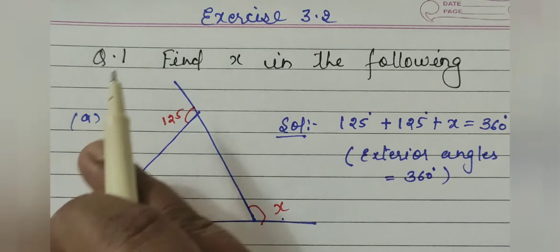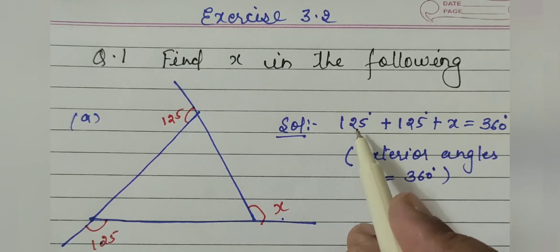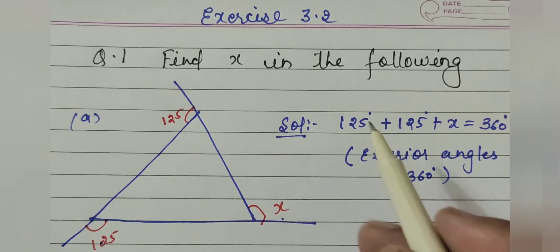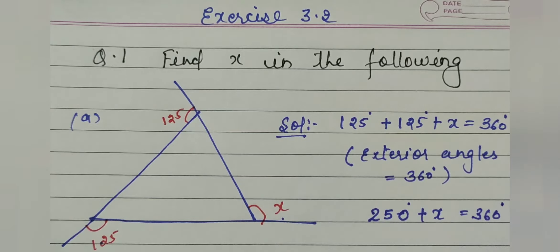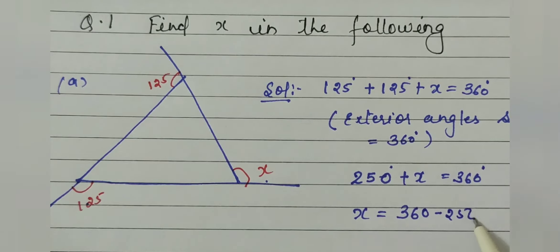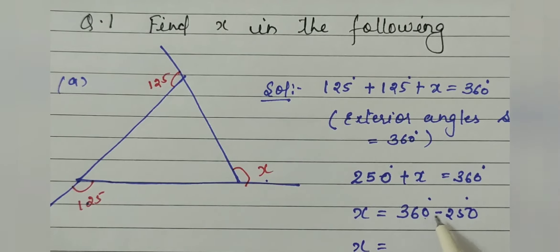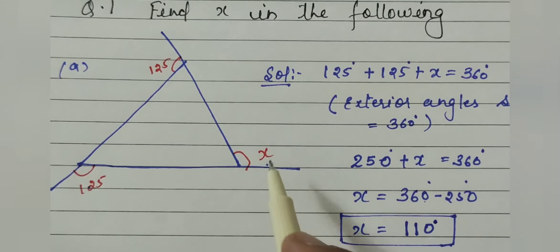The sum of measure of exterior angles of any polygon equals 360 degrees. So solving: 125 plus 125 equals 250, and 250 plus x equals 360 degrees. Therefore x equals 360 minus 250, which gives x equal to 110 degrees.